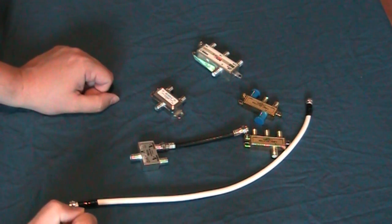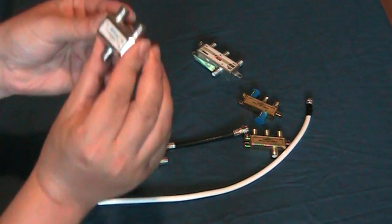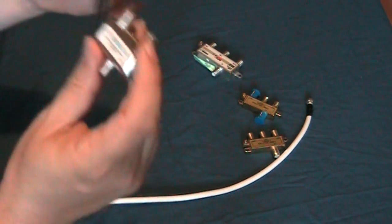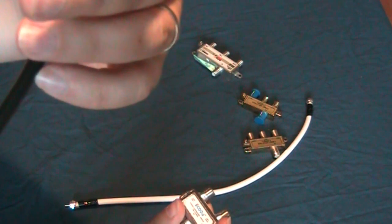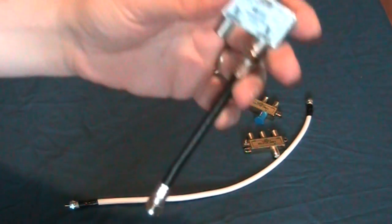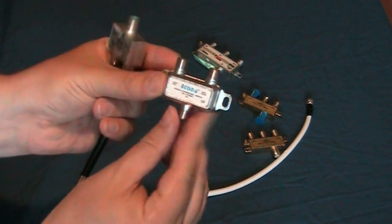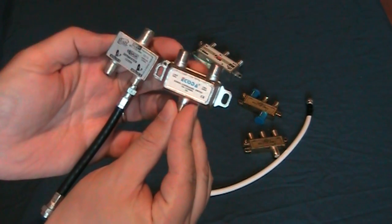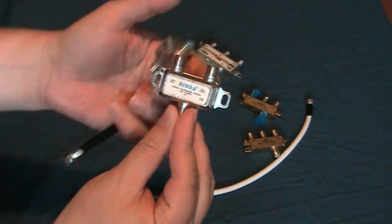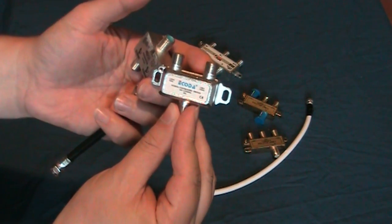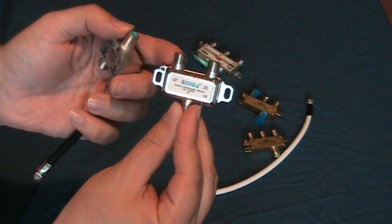For this video, I'd like to talk about splitters and 22k switches. These switches here are 22k switches. What that means is when you're in your satellite settings, you turn 22k on and it'll go to the other port.